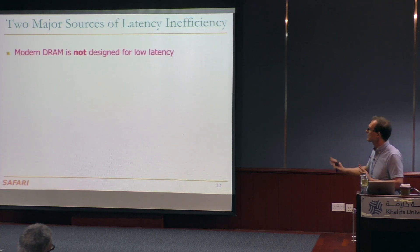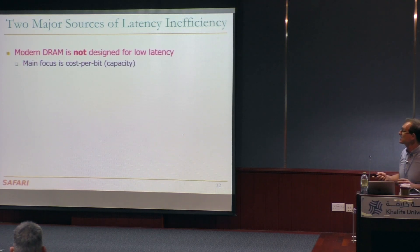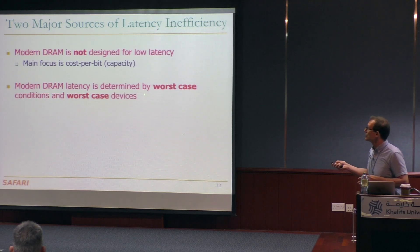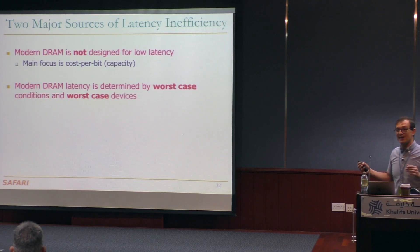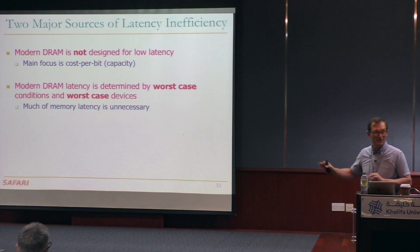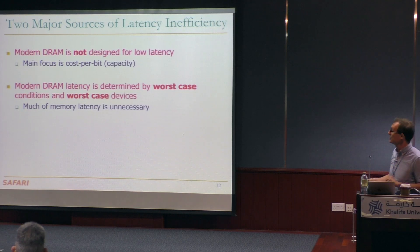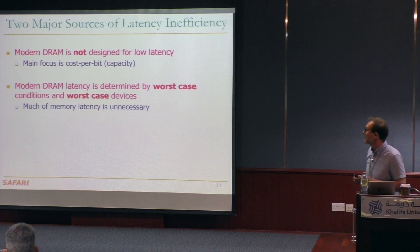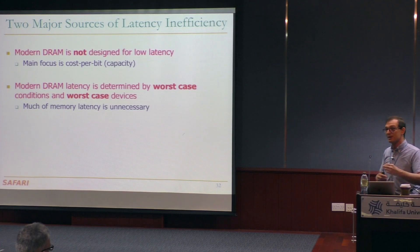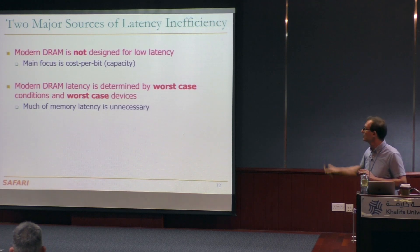We need to change the paradigm to think more data-centric. If you think data-centric, you go and reduce the latency at the source of the data, which is really DRAM — but this is true for storage also. There are two major sources of latency inefficiency. One is that modern DRAM is not designed for latency — the main focus is capacity. Modern DRAM latency is determined by worst-case conditions and worst-case devices. Much of memory latency is actually unnecessary.